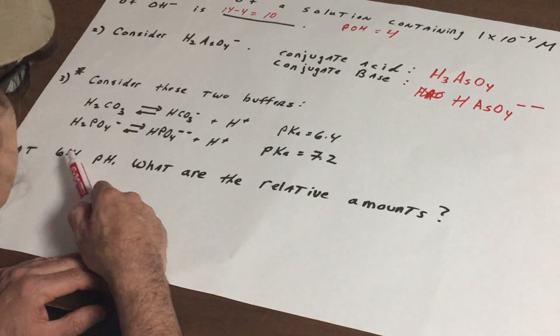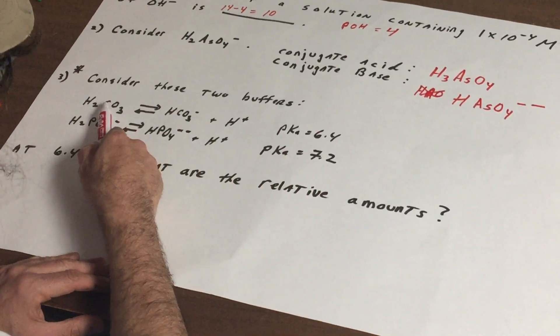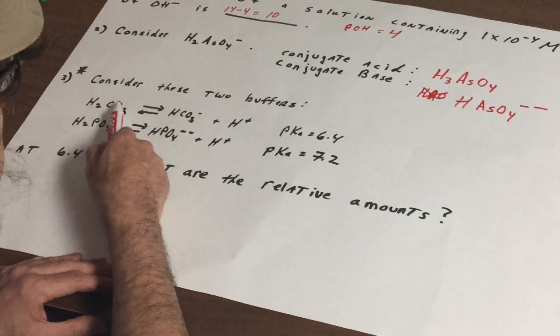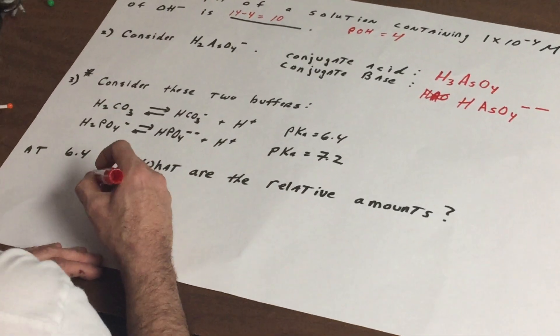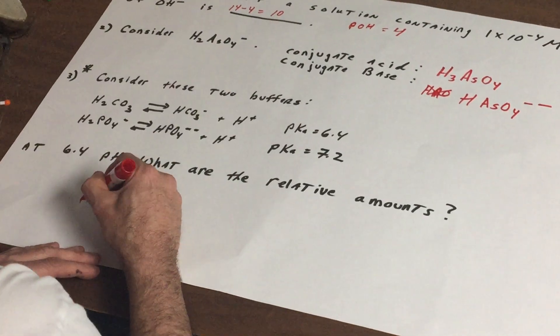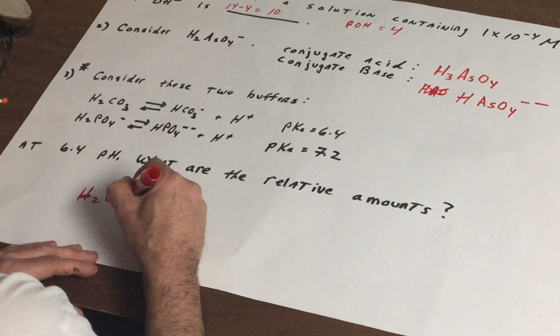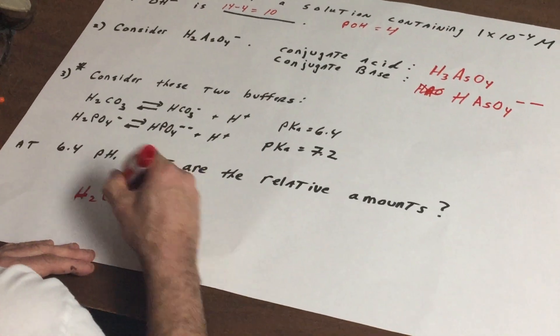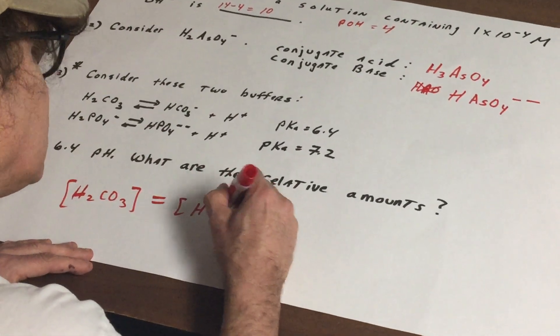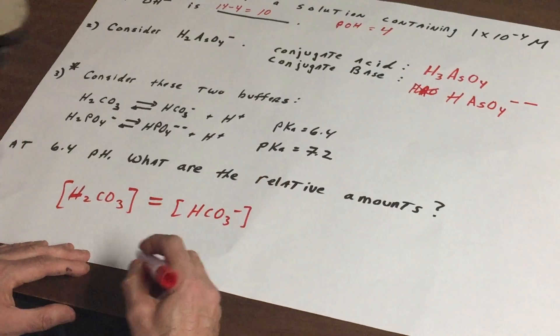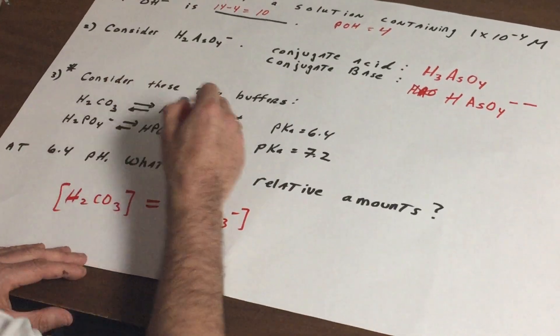Now the minute you see 6.4, that puts me at the pKa of the first buffer system. So if you're at the pKa that means that the concentrations are equal.